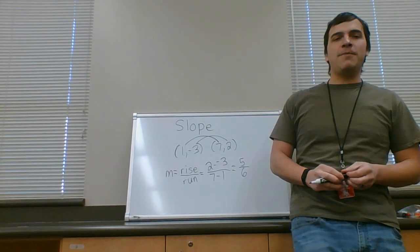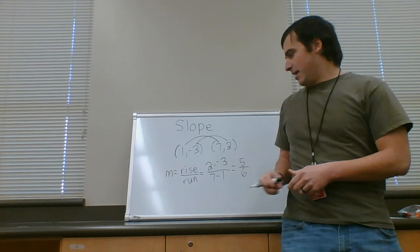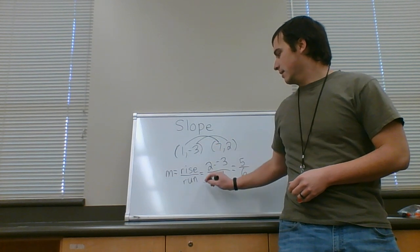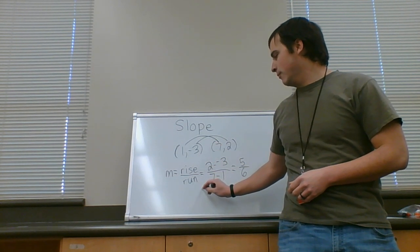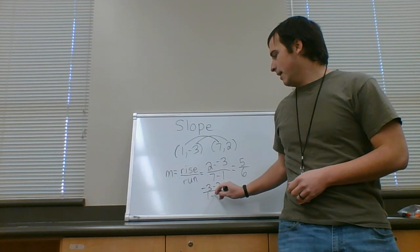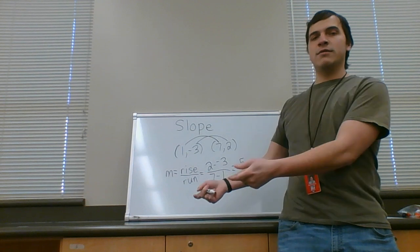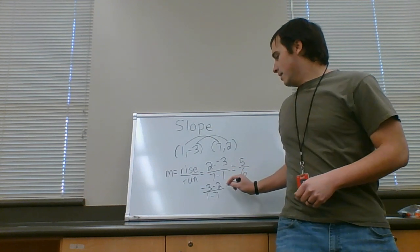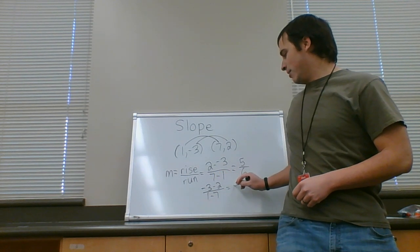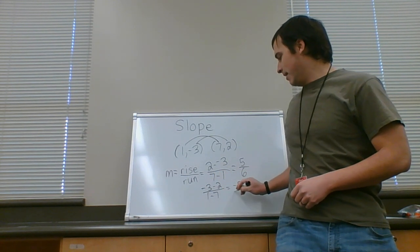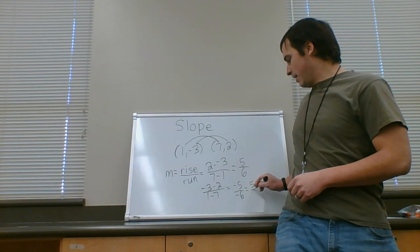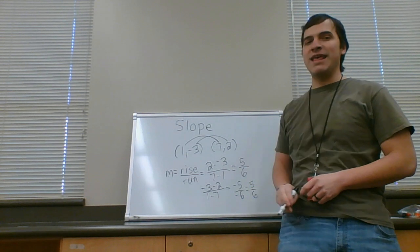Now one thing that might come up when you're doing your problems is that if you did it the other way, you would do negative three minus two and one minus seven if you did it left to right. This still works. It's just that means you have to simplify at the end. Negative three minus two is negative five, one minus seven is negative six. That simplifies to just five over six because negative divided by negative is positive.